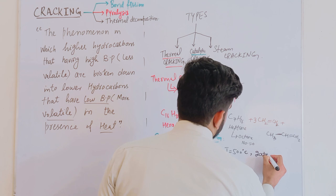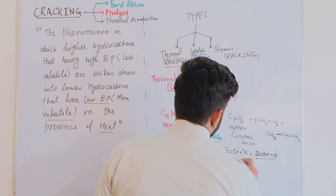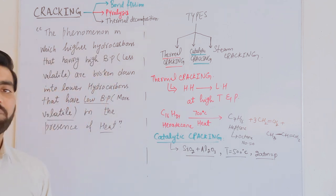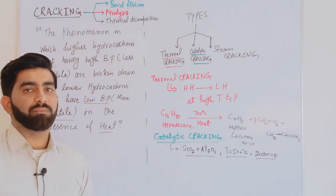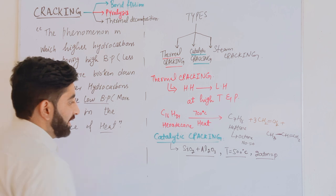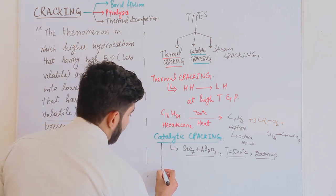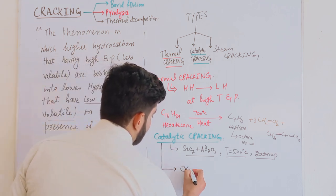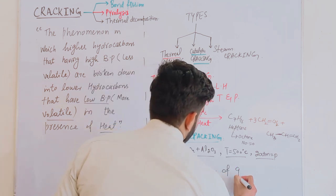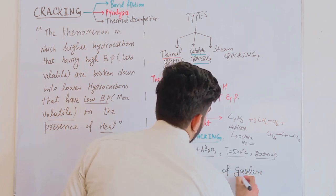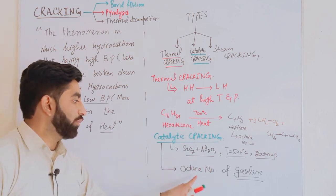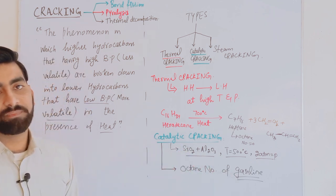In catalytic cracking, the pressure is about 2 to 80 atm, temperature is about 500°C, and a mixture of silica and alumina is used for the breakdown of higher hydrocarbons into lower hydrocarbons. Catalytic cracking is useful for improving the octane number of gasoline, which is a high-demand lower hydrocarbon.